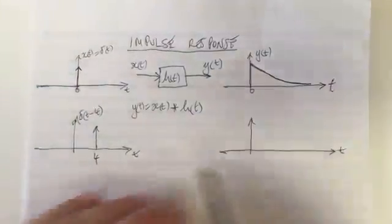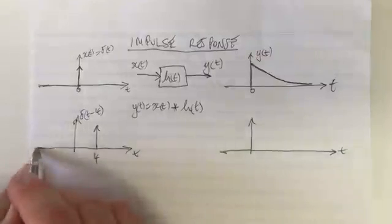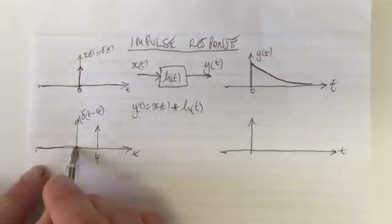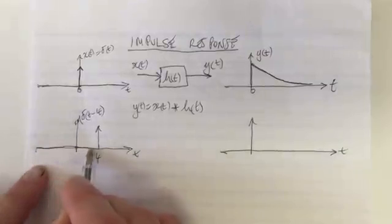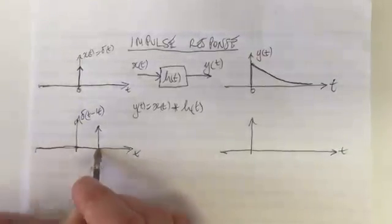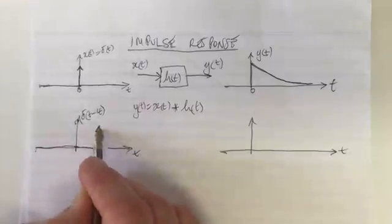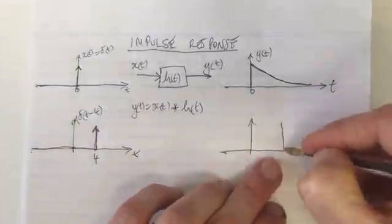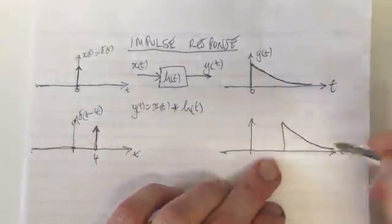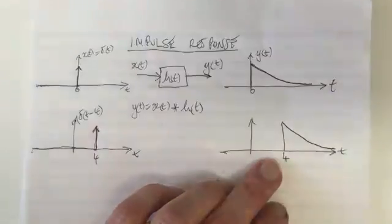At time equals 0, there's been no input to the system, so you wouldn't expect anything to happen then, still wouldn't expect anything until time equals 4, then you would expect the system would respond, and it's had an impulse put into it, so you would expect the impulse response to then follow, starting at time equals 4.